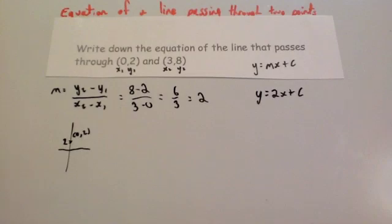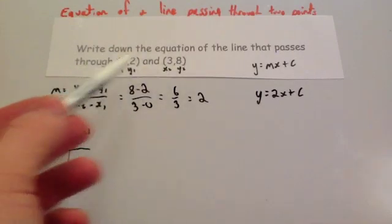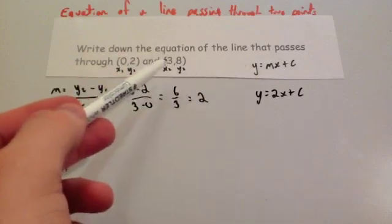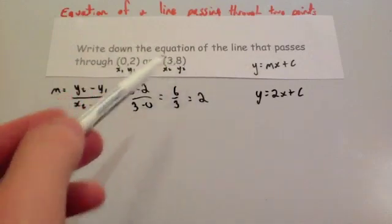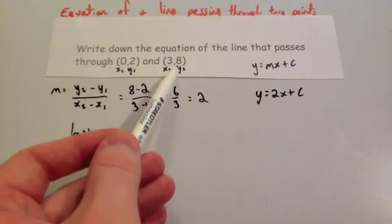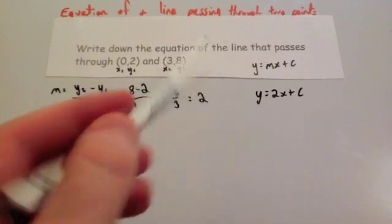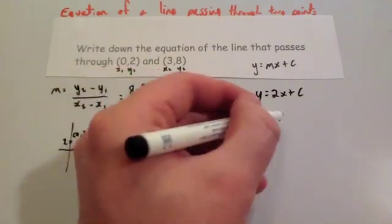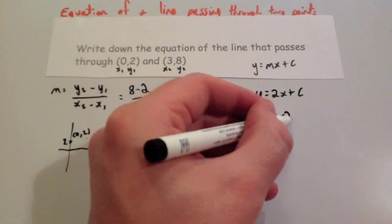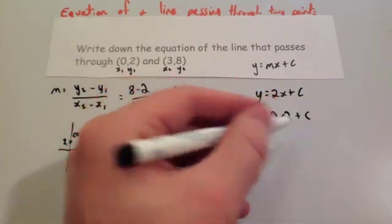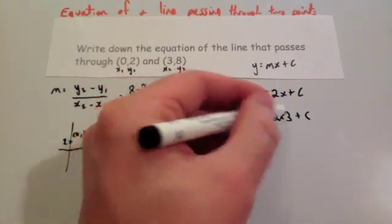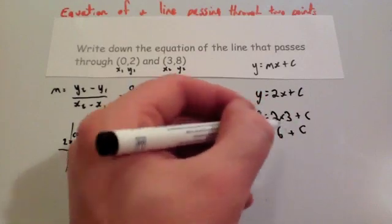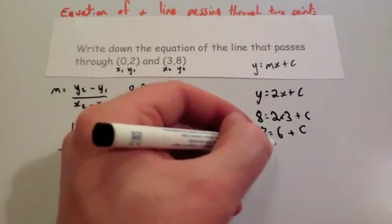Now, an alternative way to do it, and the way to do it for all of them to find your plus c, is to choose one of these two coordinates and substitute it in. Let's substitute in (3,8). So x is 3, and y is 8. So let's put these in. So y is equal to 8, so 8 equals 2 times x, so 2 times 3, plus c. So that gives you 8 equals 6 plus c.